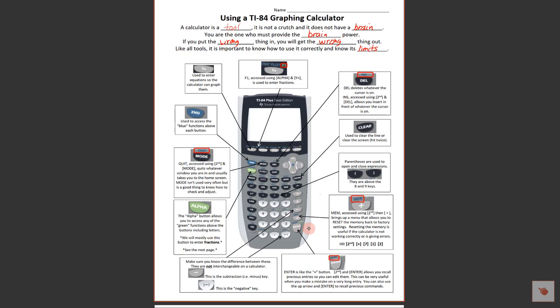On a TI-84, you can also use the up arrows and the enter key to grab previously typed commands. The memory button is above the plus, so hit second + plus for memory. It allows you to reset things back to factory settings — very useful if someone used the calculator before you and it's acting weird. To reset: hit second, then plus (memory), then 7, then 1, then 2.